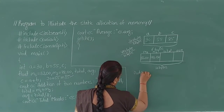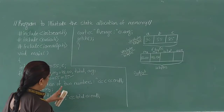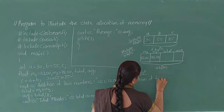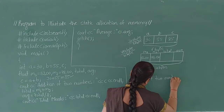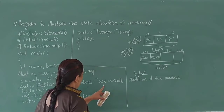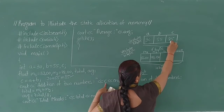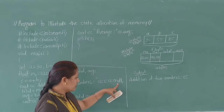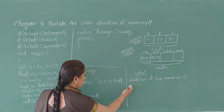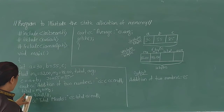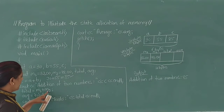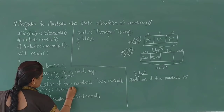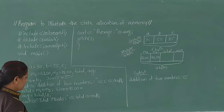On the output screen, it first displays the statement 'Addition of 2 numbers', then displays the C value which is 85. The endl manipulator is used, meaning the cursor goes to the next line in the output screen. Next, total = m1 + m2. The m1 value is 82.00 plus m2 value is 78.00.